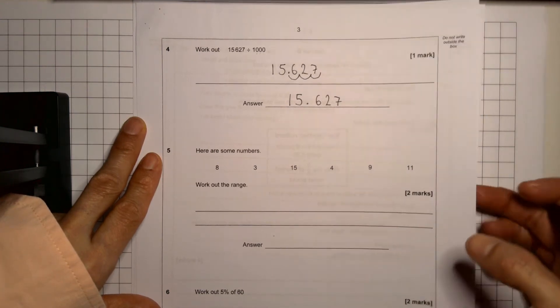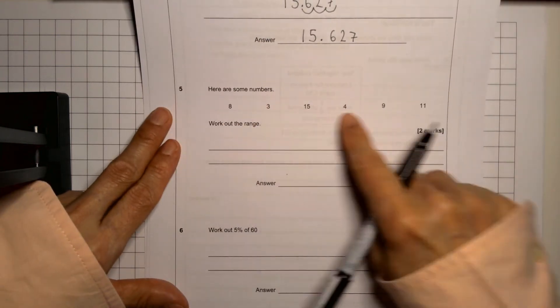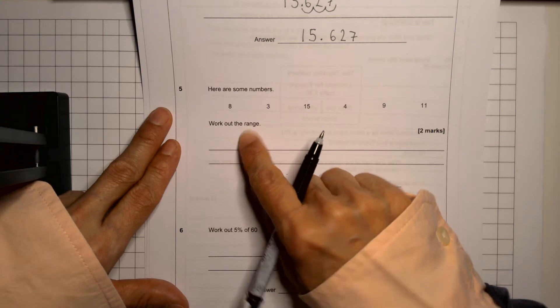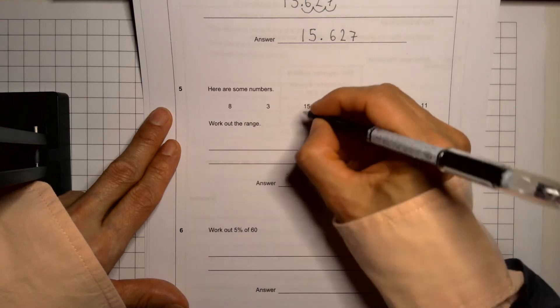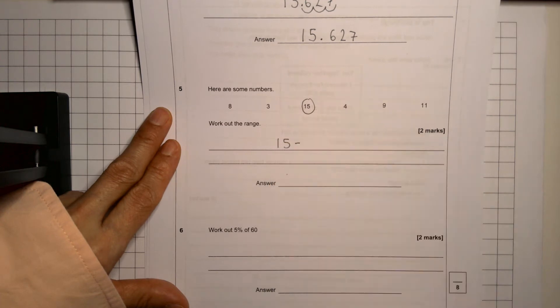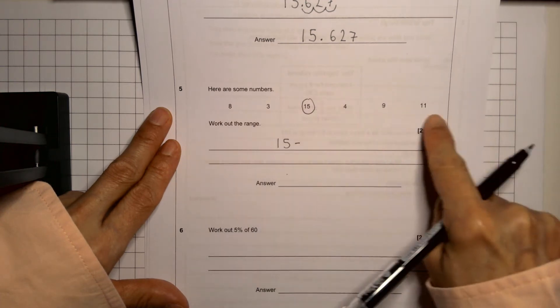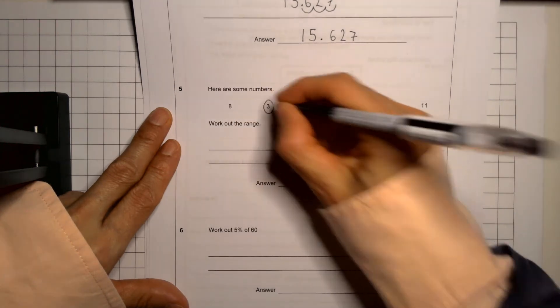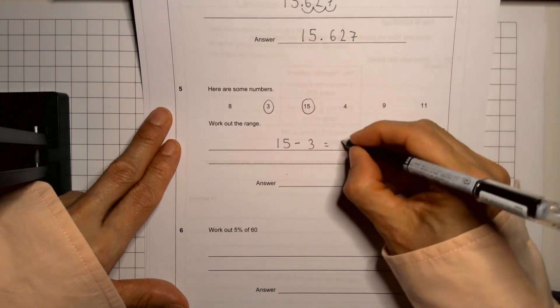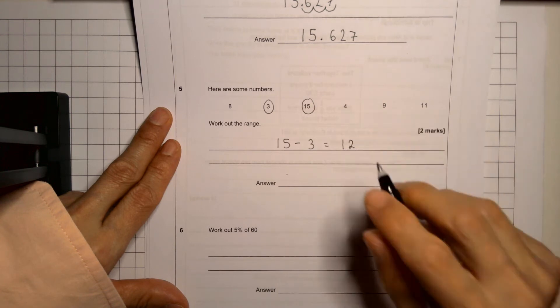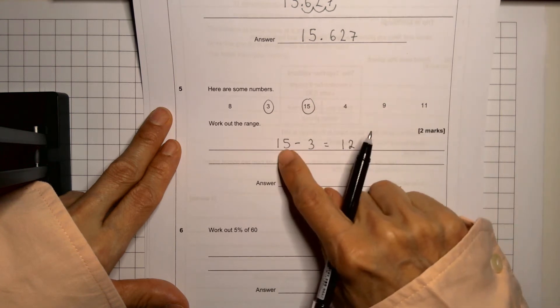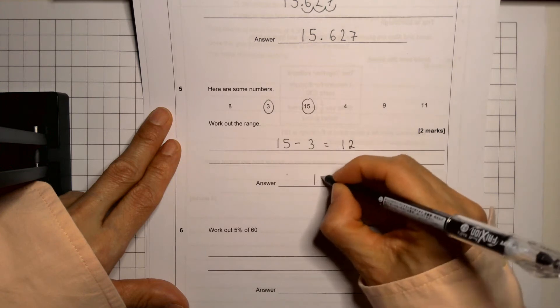Question five. Once again, they give us a list of numbers and they're asking us to work out the range. And here you have to remember that you must have the biggest number and the biggest number there is 15. And you must take away the smallest number and look carefully where's the smallest number there it is. 15 take away 3 is 12. You can test it or check it by working backwards 12 plus 3 is 15. So yes, that's correct. So let's write our answer 12.